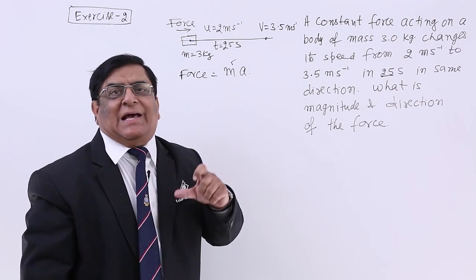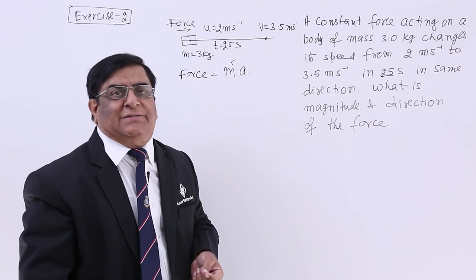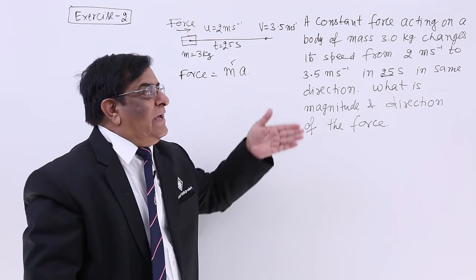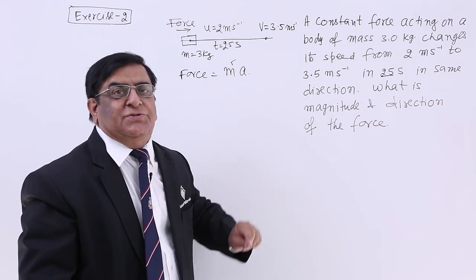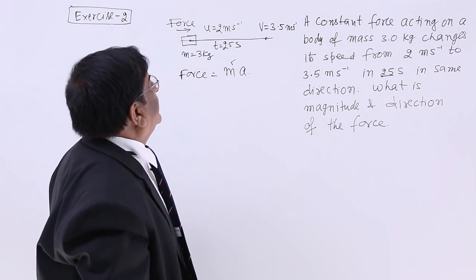To find out acceleration, acceleration is a quantity in kinematics. And we can calculate it by any equation out of the three equations we know. So which are the quantities given here?